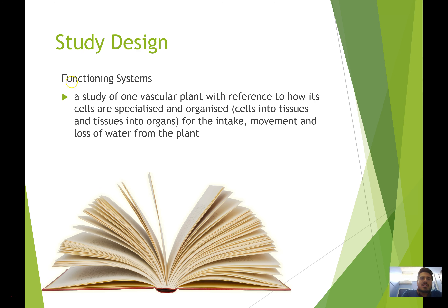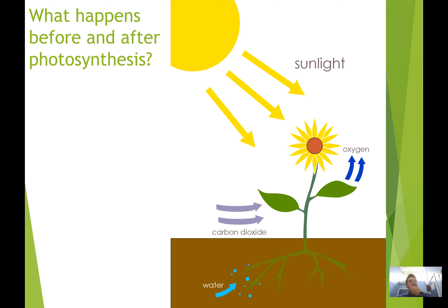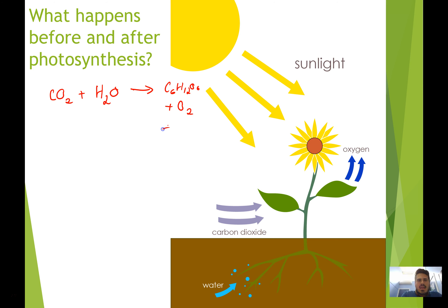In the study design, we're back to the functioning systems part, and we're going to study vascular plants with reference to how cells are specialized and organized — cells into tissues, tissues into organs — for the intake, movement, and loss of water from the plant. Photosynthesis involves carbon dioxide and water turning into glucose and oxygen gas, with a net output of water as well. What happens to these substances before and after photosynthesis is the focus of today's lesson.